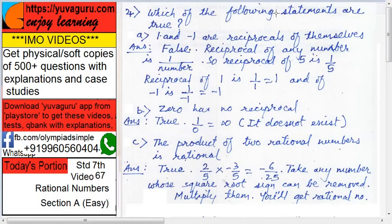Which of the following statements are true? Statement a: 1 and -1 are reciprocals of each other. False, because the reciprocal of any number is 1 upon the number. So reciprocal of 5 is 1/5, reciprocal of 1